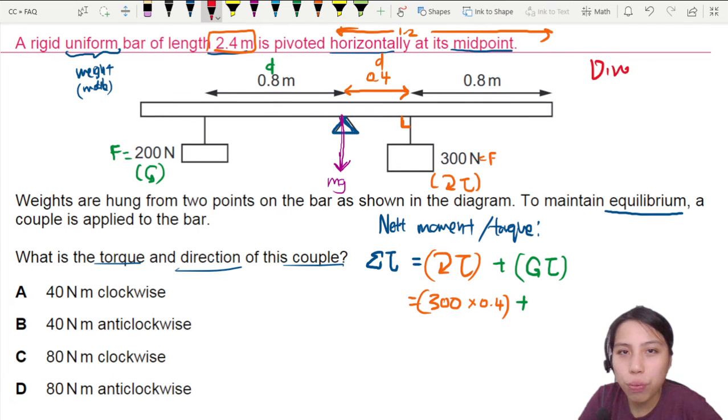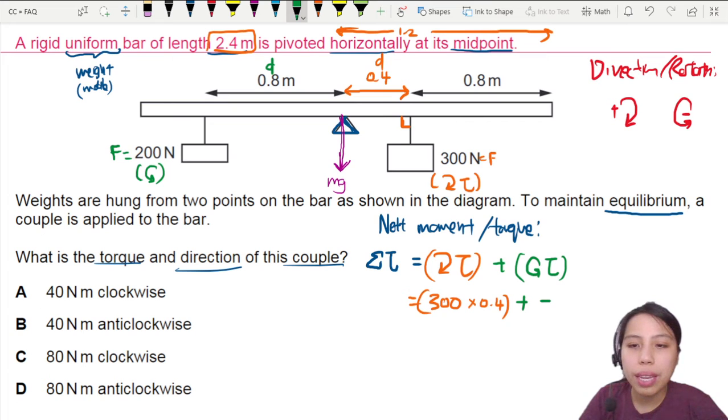So my anti-clockwise, I need to add a negative in front. So this will be negative. What's the force? 200 times 0.8.